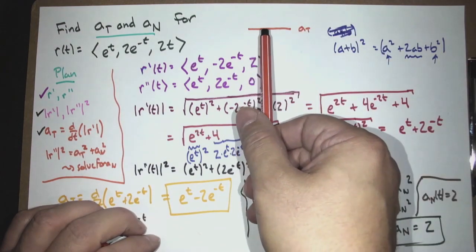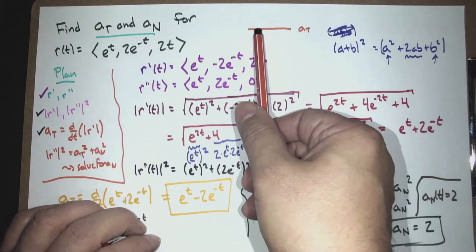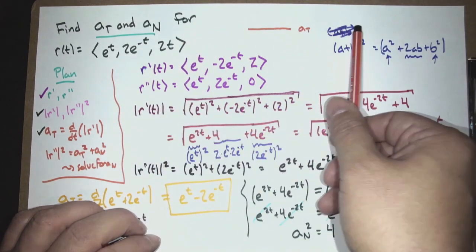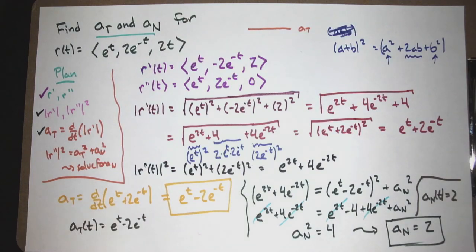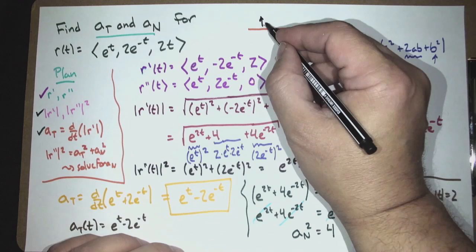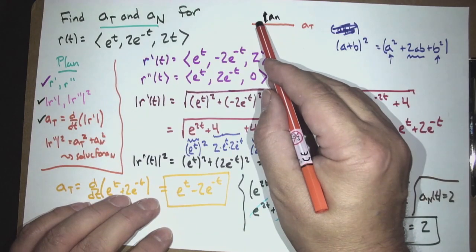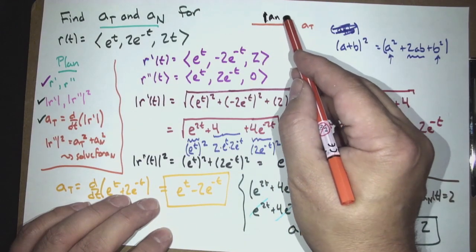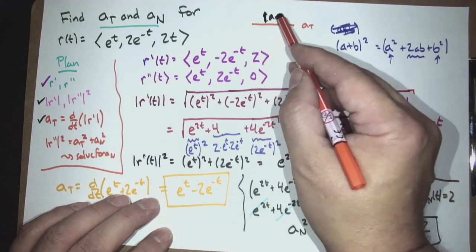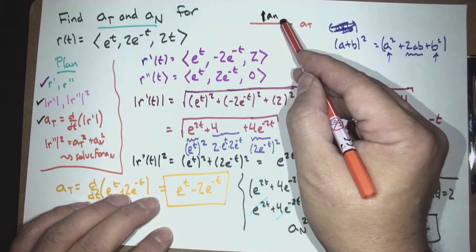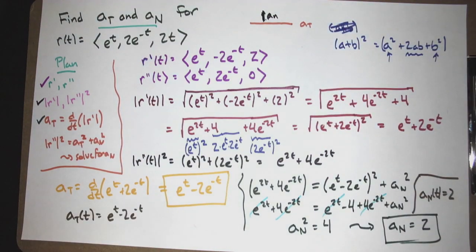Normal here means perpendicular — perpendicular to the motion, perpendicular to the curve. The osculating plane contains both the direction of motion and the direction of acceleration, but when we say 'normal' in decomposing acceleration, we mean perpendicular to the direction of motion, not the normal to the osculating plane. Be careful about what 'normal' means in context.